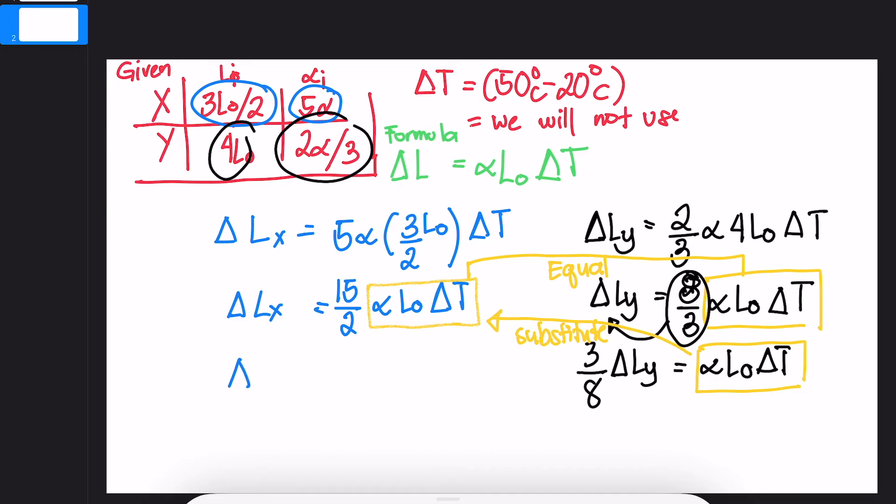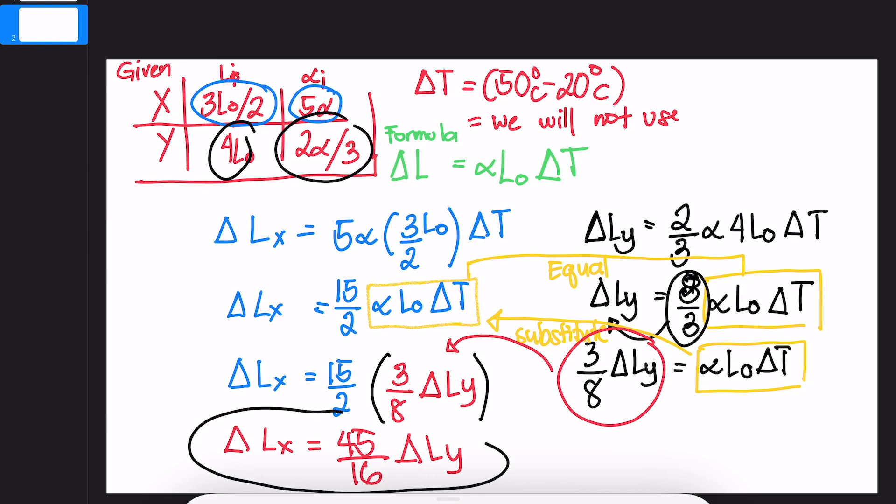Let's go back to change in LX. This is 15 over 2, but we know the value of alpha L delta T, and that is 3 over 8. Therefore, the answer is 3. Thank you.